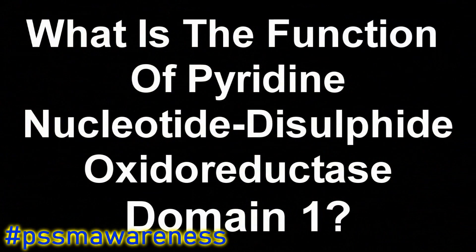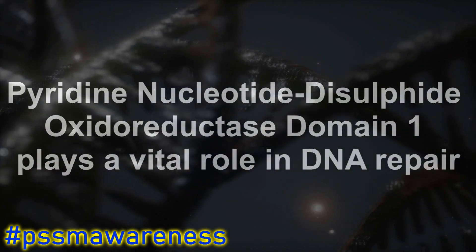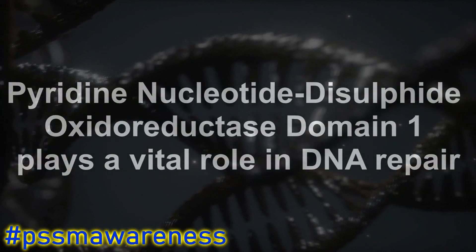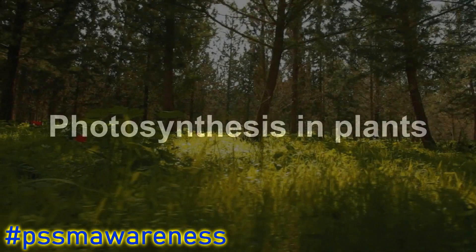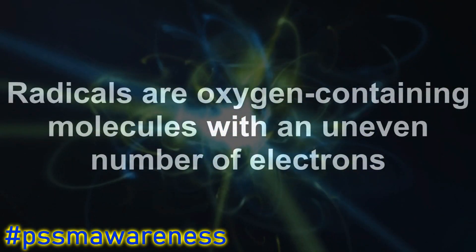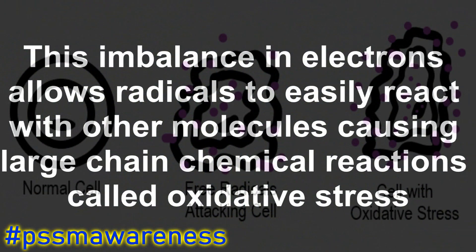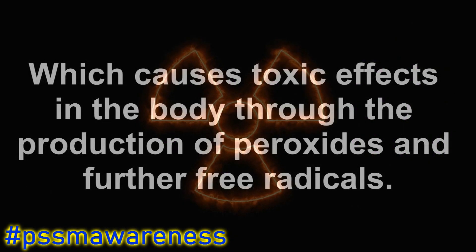What is the function of pyridine nucleotide disulfide oxidoreductase domain 1? It plays a vital role in DNA repair, photosynthesis in plants, and removal of radicals. Radicals are oxygen-containing molecules with an uneven number of electrons. This imbalance allows radicals to easily react with other molecules, causing large chain chemical reactions called oxidative stress, which produces peroxide and further free radicals, creating toxic effects in the body.